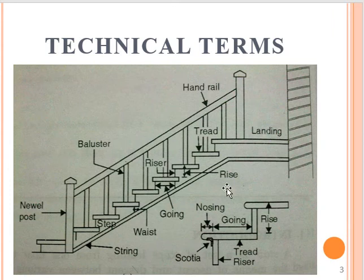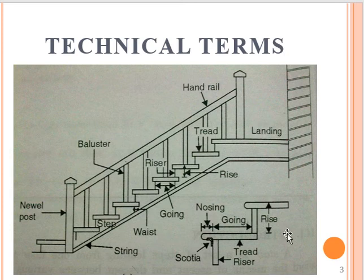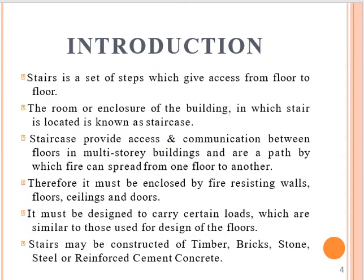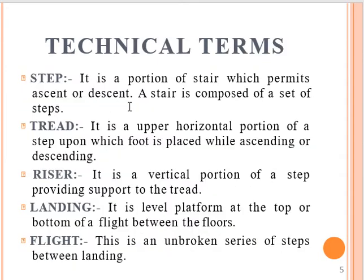We have technical terms of the staircase. The first step is a portion of stair which permits ascent or descent. The stair is composed of a set of steps. Thread and riser are two terms. Thread is the upper horizontal portion of a step upon which the foot is placed while ascending or descending.